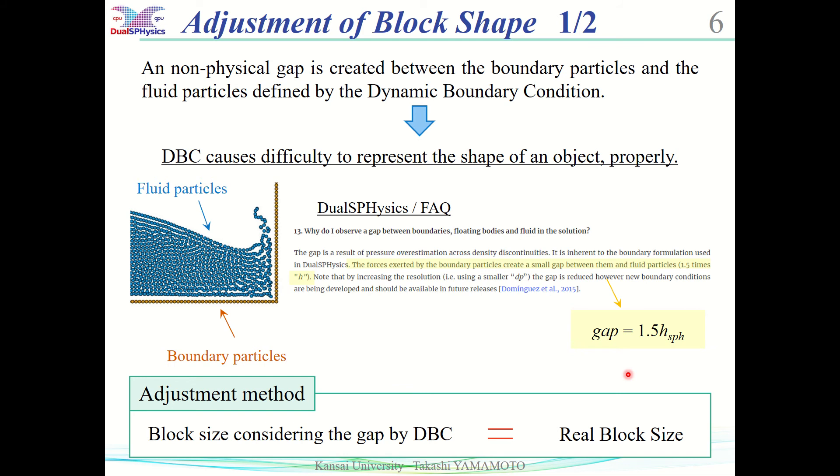Next, I explain the construction of the block model. Due to the effect of dynamic boundary condition, a gap is created between the fluid particle and the boundary particle. Dynamic boundary condition causes difficulty to represent the shape of an object's property.